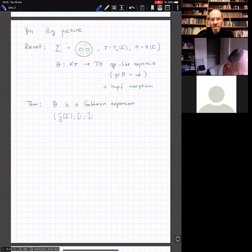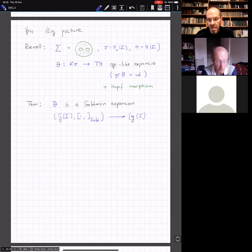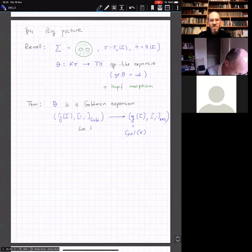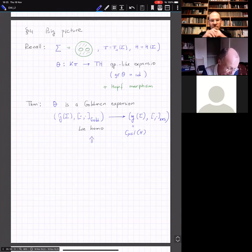The theorem says that theta is a Goldman expansion, meaning it induces a Lie morphism from the Goldman-Lie algebra with the Goldman bracket to this gadget we constructed last time, the space of cyclic words in H together with the KKS bracket. In fact, if you do completions in the right way, this map will be an isomorphism. But I'm saying it's a Lie homomorphism because maybe I didn't speak enough about completions.